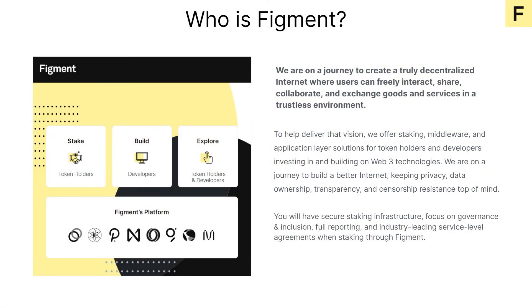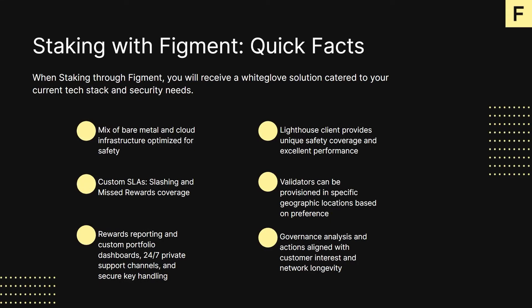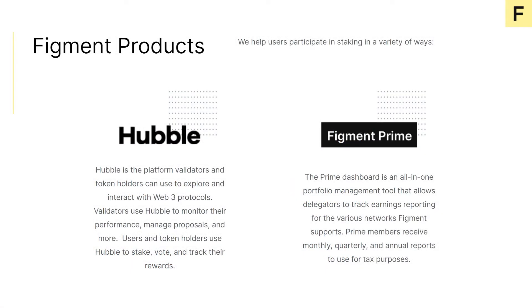At Figment, we're on a journey to create a truly decentralized internet where users can freely interact, share, collaborate, and exchange goods and services in a trustless environment. To help deliver that vision, we offer staking, middleware, and application layer solutions for token holders and developers investing in and building on Web3 technologies. We're on a journey to create a better internet, keeping privacy, data ownership, transparency, and censorship resistance top of mind.